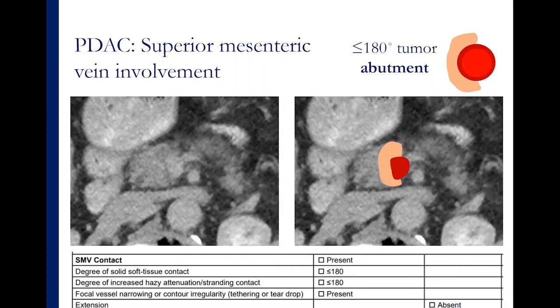Here's a sample case using this reporting template in a patient with a tumor in the pancreatic head and neck contacting the superior mesenteric vein. There's approximately 180 degree tumor abutment with the SMV. There's also a focal contour irregularity — if you look at the colored portion of the vein highlighted in red, you'll see that the contour contacting the tumor is a little more flattened. In places that use a drop-down menu, all you do is select the salient features and the report populates these findings for our clinicians.